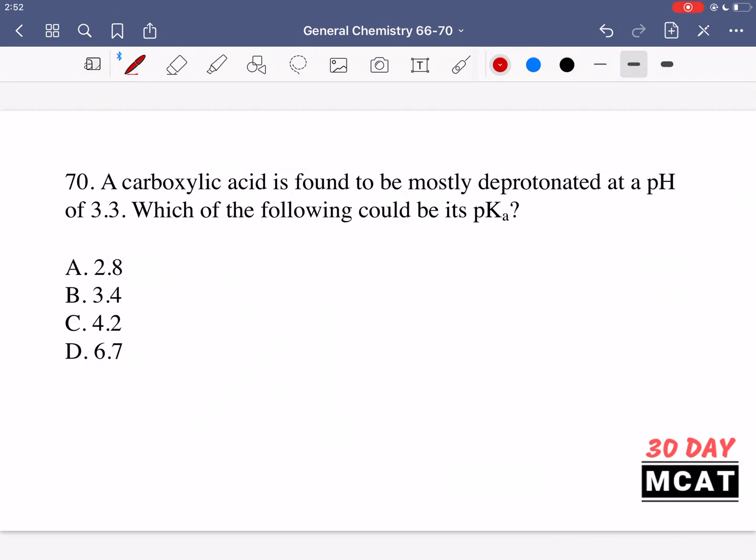In question 70, it says a carboxylic acid is found to be mostly deprotonated at a pH of 3.3. Which of the following could be its pKa? So we have some acid. It's deprotonated at pH 3.3. And then which one could be its pKa, potentially? So for this, you need to know the definition of pKa.